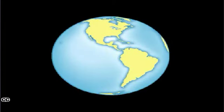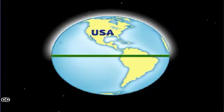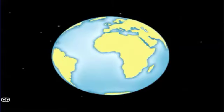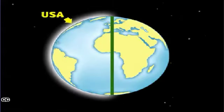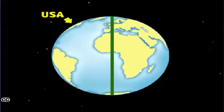So, in what hemispheres is the United States located? If you divide Earth at the equator, you see that the United States is in the northern hemisphere. If you divide Earth at the prime meridian, you see that the United States is in the western hemisphere.